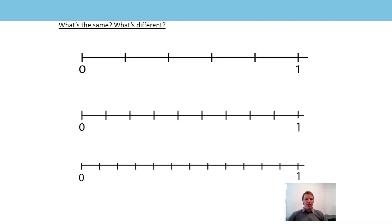Here are the three number lines we've looked at. What's the same and what's different? One difference is the number of parts each number line has been split into. Let's count the first number line: one, two, three, four, five parts — the same as before. Count along: zero, one fifth, two fifths, three fifths, four fifths, one.